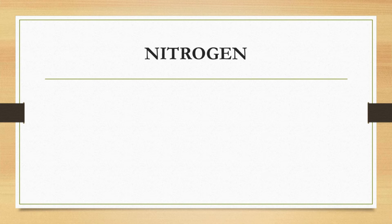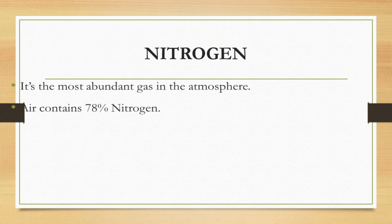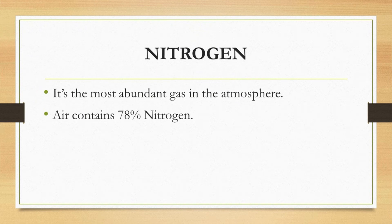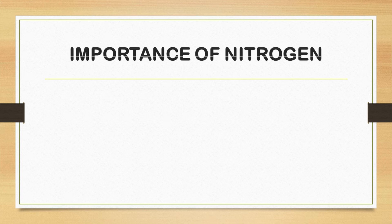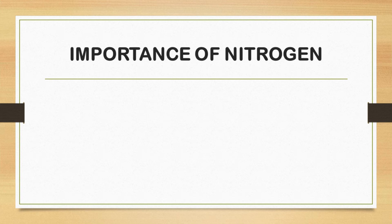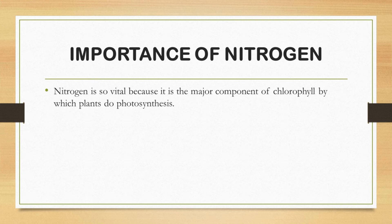First one, nitrogen. It's the most abundant gas in the atmosphere. Air contains 78% of nitrogen. Children, we use nitrogen in our daily life in many ways. Nitrogen has a number of uses. We can mention a few of them here. Nitrogen is so vital because it is the major component of chlorophyll, by which plants do photosynthesis.